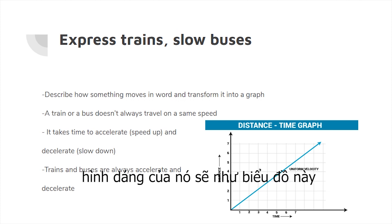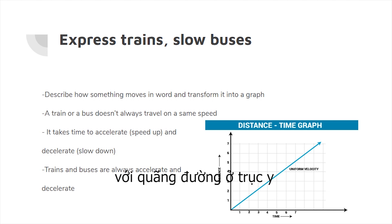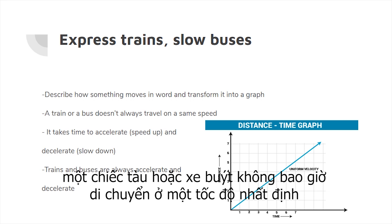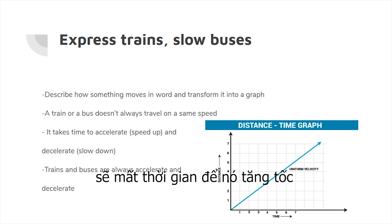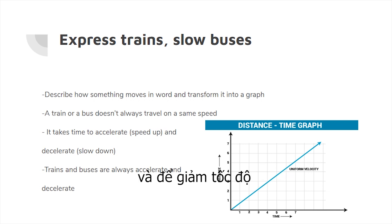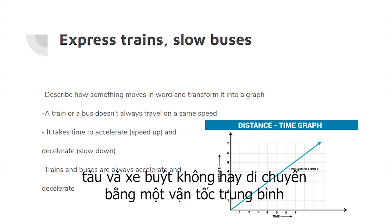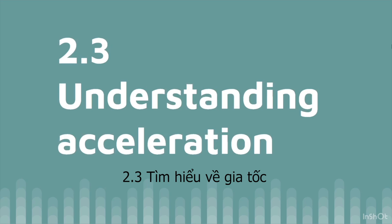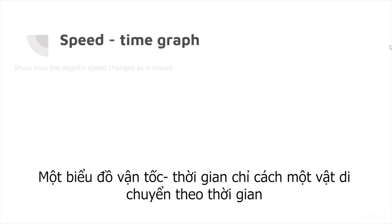Section 2.2: Distance-Time Graphs. First, ask a friend to describe how a vehicle moves, then transform it into a graph. The graph has distance on the y-axis and time on the x-axis. A train or bus doesn't always travel at the same speed — it may accelerate (speed up) or decelerate (slow down) at various times.